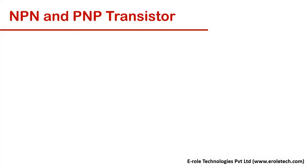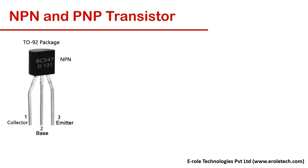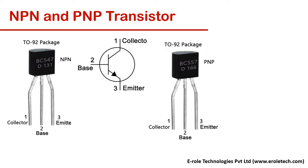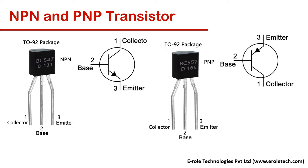Transistor is a 3-terminal electronic device which is used to switch electric signals between 0 and 1. The three terminals are named as collector, base, and emitter. Transistors are of two types: NPN and PNP.